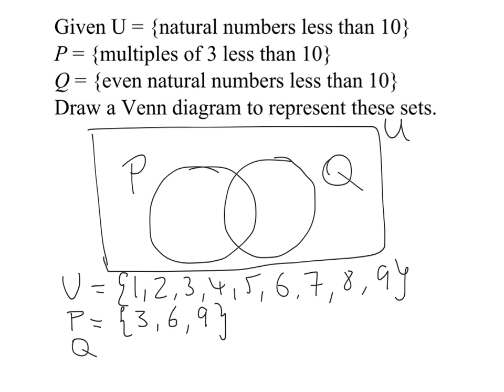And then finally, Q is the even natural numbers less than 10. So that's going to be 2, 4, 6, 8. And we're done.